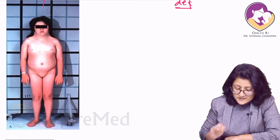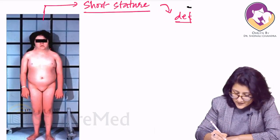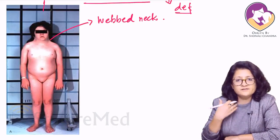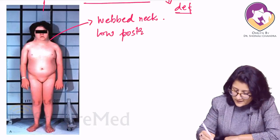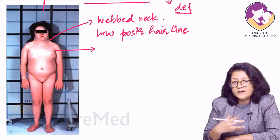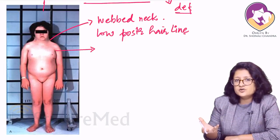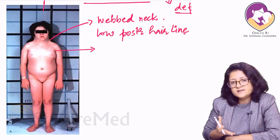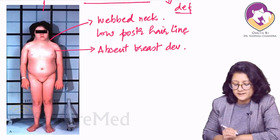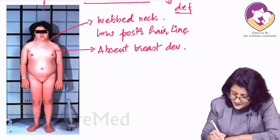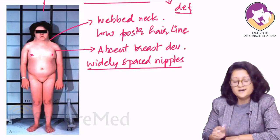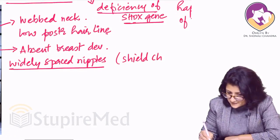Apart from short stature, there is a webbed neck, and if you look posteriorly there is a low posterior hairline. Because the streak ovaries are not synthesizing estrogen at the time of puberty, this young girl will have absent breast development. The nipples are widely spaced due to a shield-like chest — a wide, shield chest.